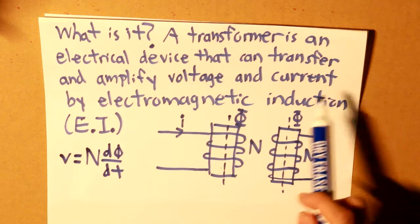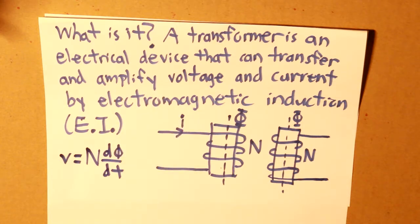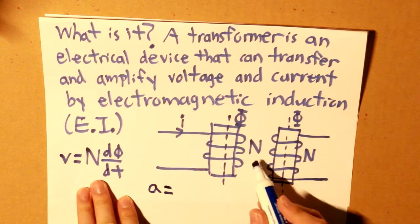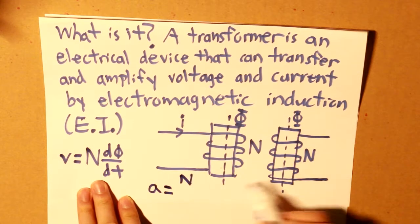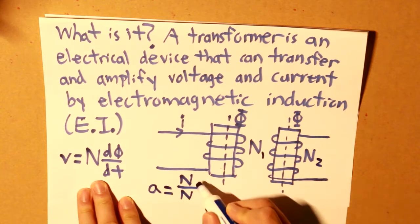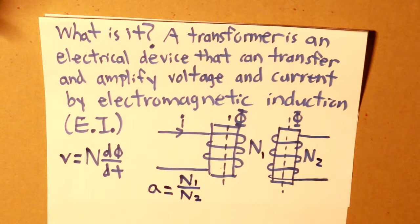Now a transformer, as I've said before, can transfer and amplify, and in order to do that you need to have two coils between each other, also known as mutual inductance. Now the number of turns would basically determine the amplification. So amplification, also known as lowercase a, is equal to n1 divided by n2, and this will be important to understand the methodology of impedance transfer.